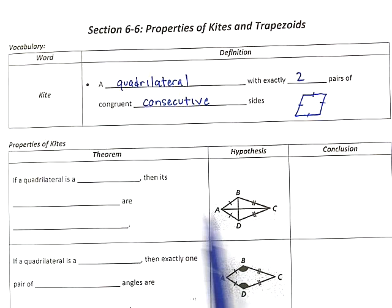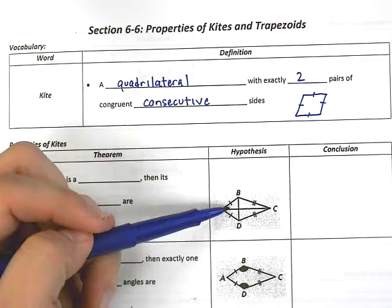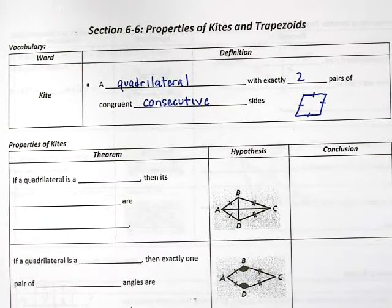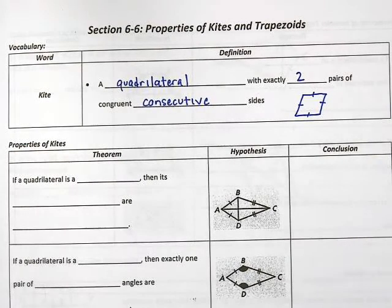Kites are a little different. If you notice in this picture, there's one and two pairs of consecutive sides. So this is what we're looking for, two pairs of congruent consecutive sides.